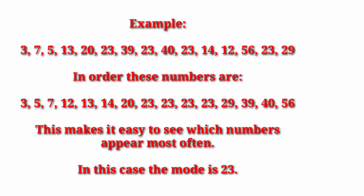Example: The observations given are 3, 7, 5, 13, 20, 23, 29, 23, 40, 23, 14, 12, 56, 23, 29. Arrange these in order. Which number is repeated the maximum number of times? The answer is 23. So the mode of the given data is 23.